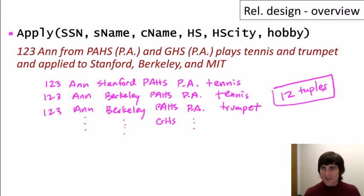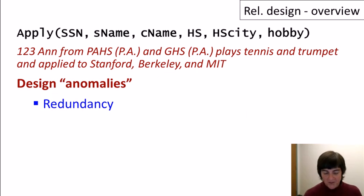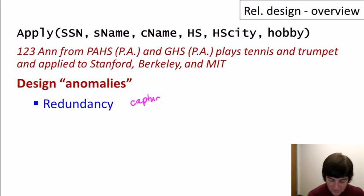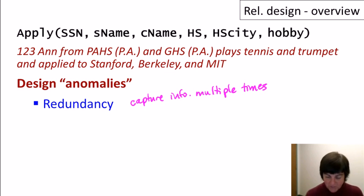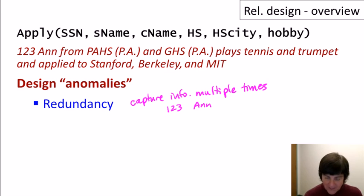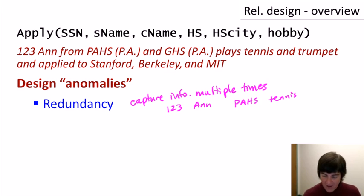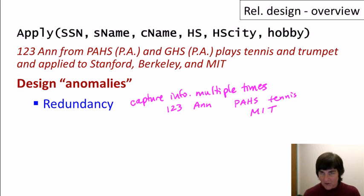Do we think that's a good design? No, it's not a good design. There are several types of anomalies. First, we capture information multiple times. For example, the association between SSN 123 and the name Ann is captured 12 times across 12 tuples. The fact that Ann went to Palo Alto High School is captured six times, that she plays tennis six times, and that she applied to MIT four times. Capturing each piece of information many times is not a good feature of a design.